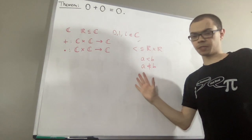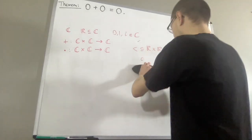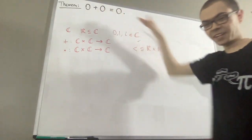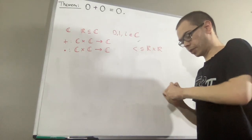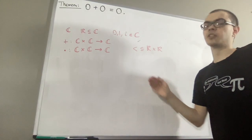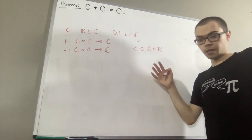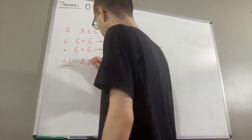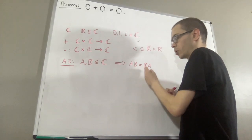We have a list of axioms for the complex numbers. Axioms one and two tell us that the sum of any two real numbers is a real number, and the product of any two real numbers is a real number. Axiom three is the commutative law of multiplication: given any two complex numbers a and b, a times b is equal to b times a.